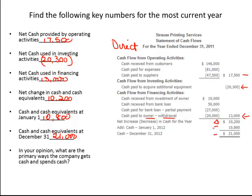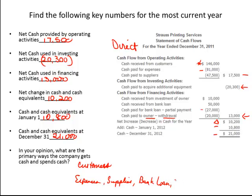What are the primary ways the company gets cash and spends it? It gets its cash primarily from its customers. And how does it spend its cash? It appears it spends its cash to pay for expenses, also to pay suppliers — those are usually your accounts payable — your bank loan, and also the owner. So those are the big items.